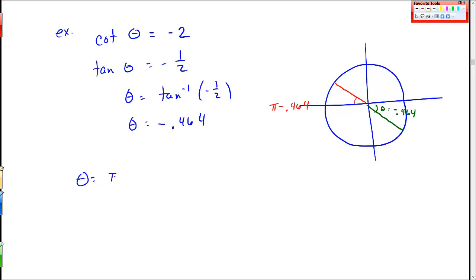So let's do that. So my true solutions, π minus 0.464 equals 2.678. And then over here, to get this one within 2π, this is 2π minus 0.464. So my second angle in here is 2π minus 0.464, which equals 5.819.